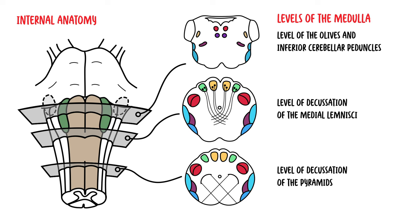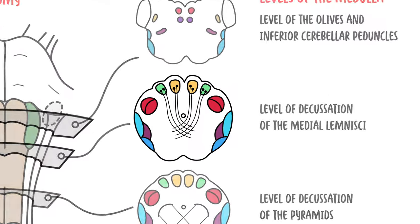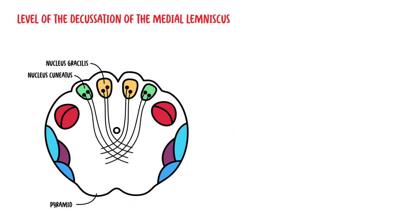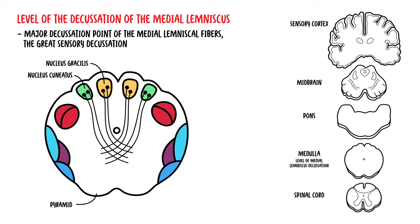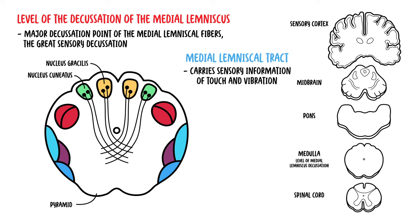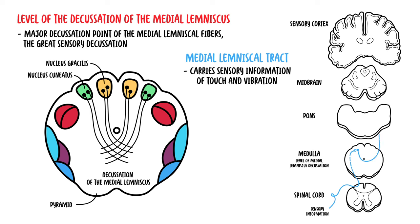Next we will discuss the level of decussation of the medial lemniscus — the great sensory decussation. The medial lemniscus tract carries sensory information of touch and vibration along the posterior spinal cord to the medulla. The sensory fibers traveling from the spinal cord synapse with fibers at the nucleus gracilis and the nucleus cuneatus. The fibers from the nucleus gracilis and cuneatus then decussate at this level, moving from one side to the other before traveling up through the brainstem to the thalamus and then to the sensory cortex.